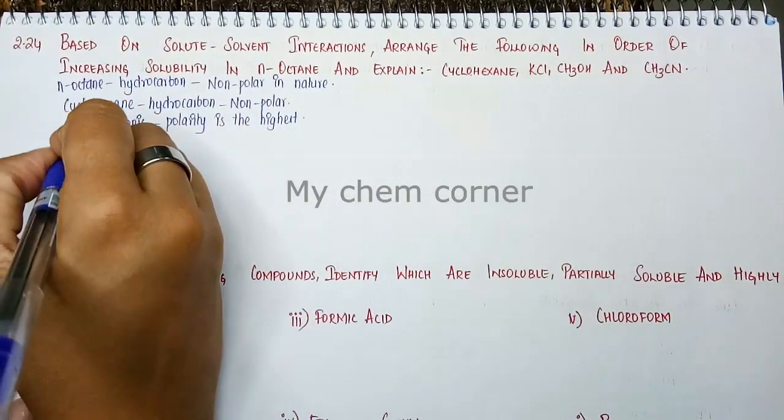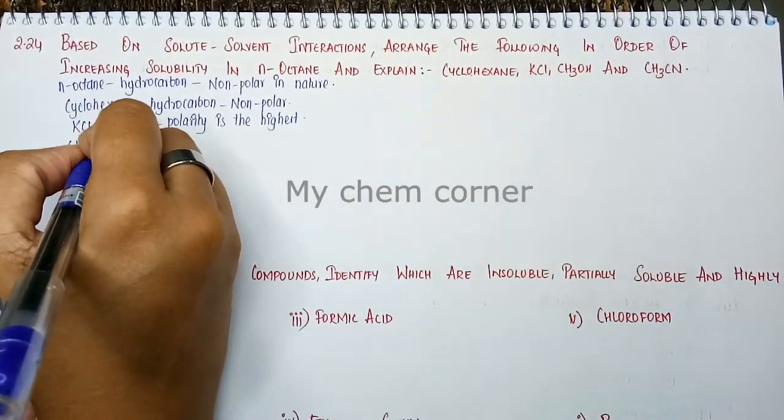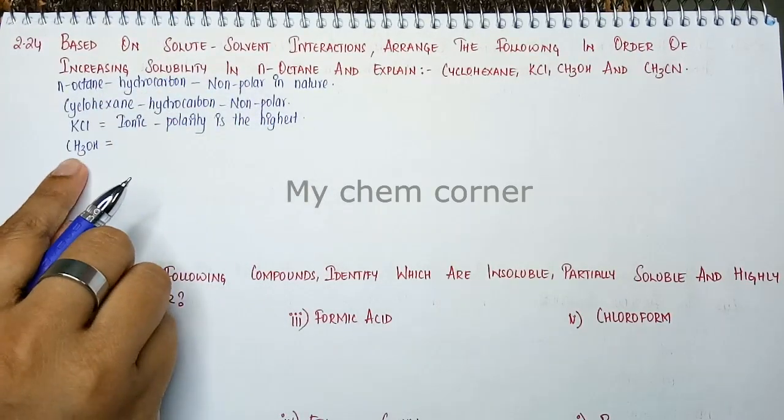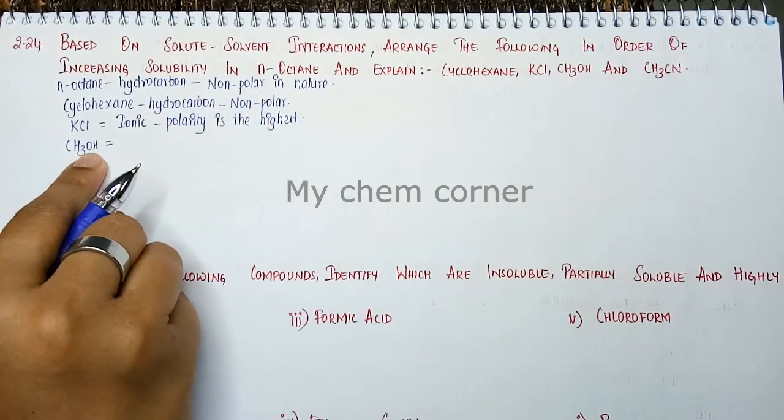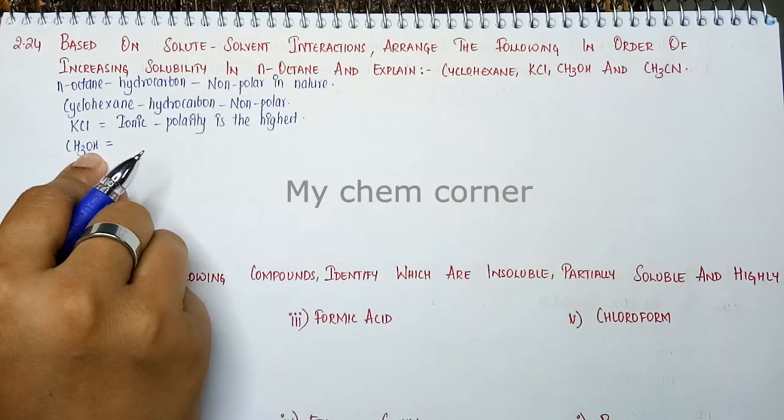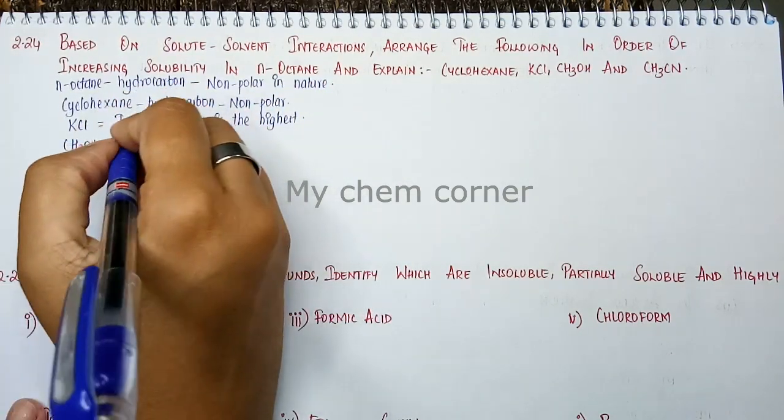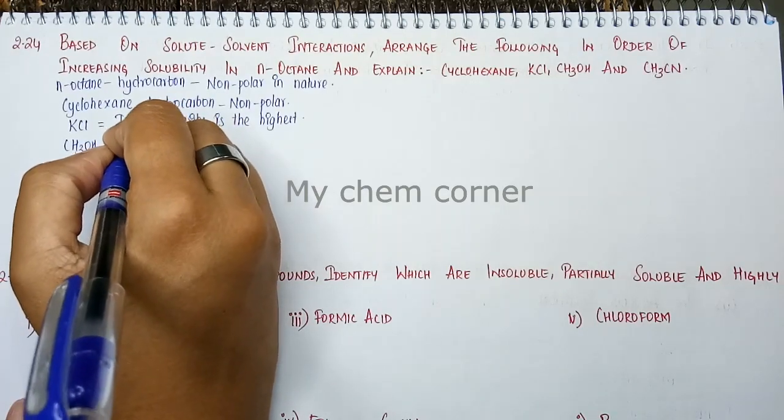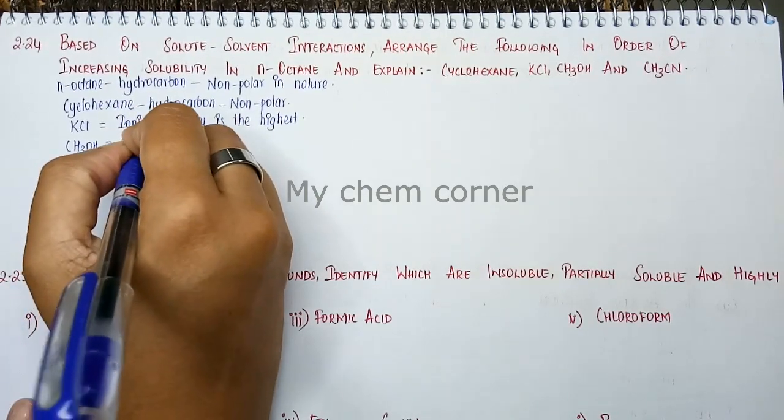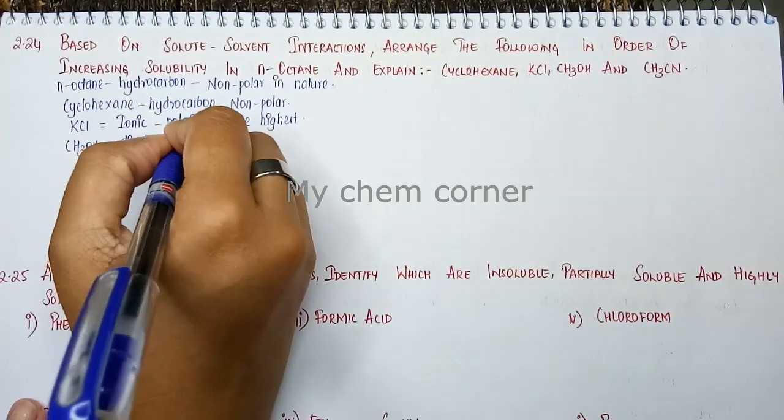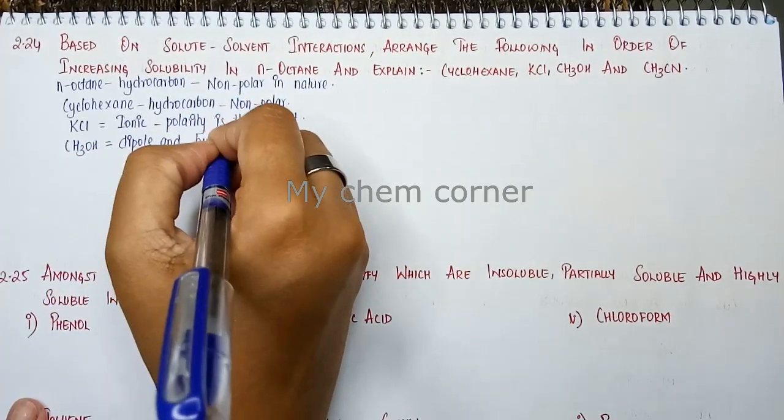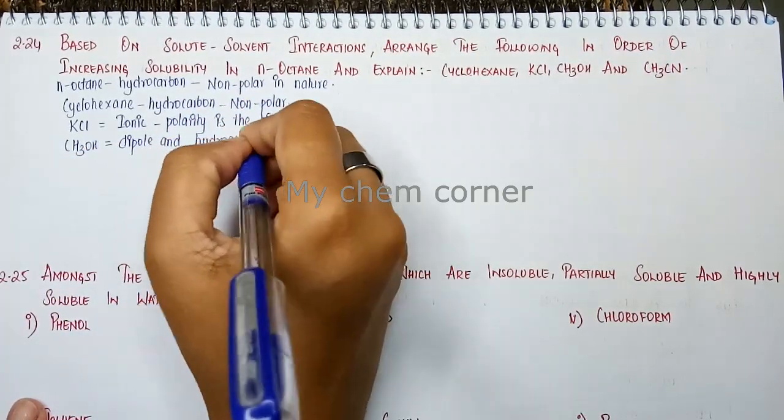Next is CH3OH. In the case of CH3OH, you will have a dipole moment because all electrons are pushed towards oxygen. Additionally, if it's mixed with water or these solvents, there will be hydrogen bonding. So there are two reasons: dipole moment and hydrogen bonding.